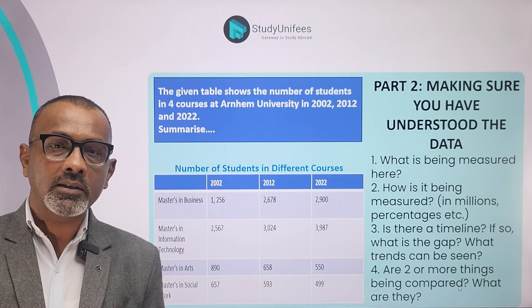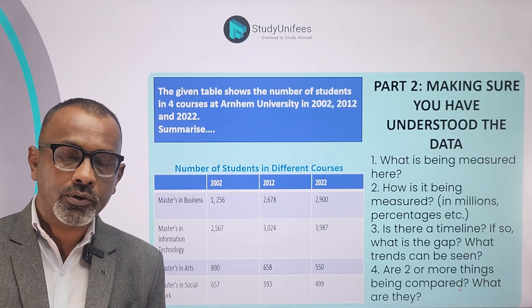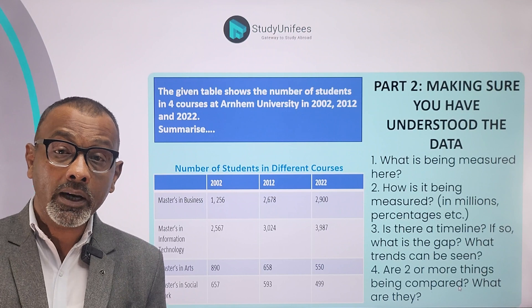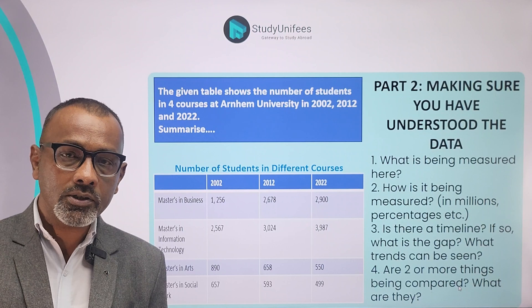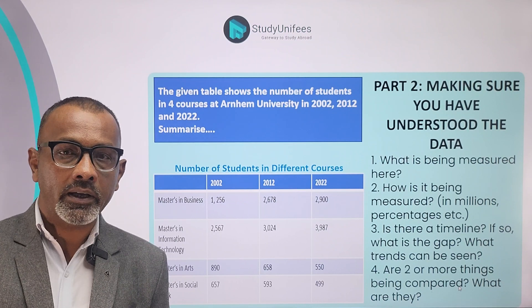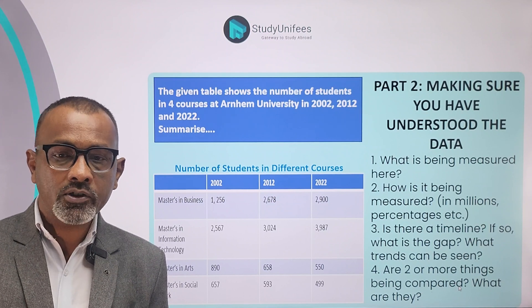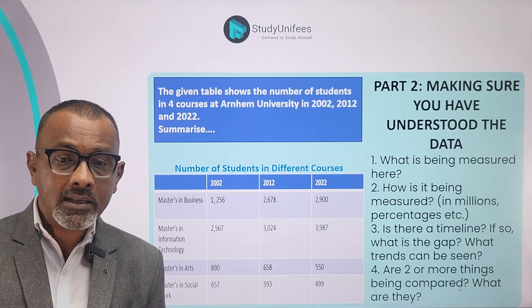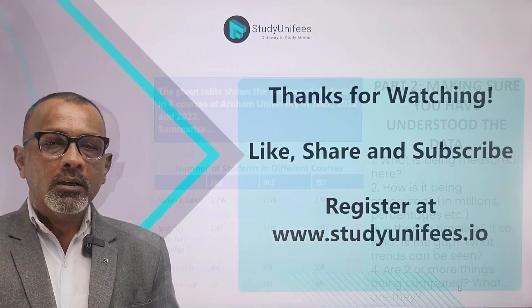Finally, let's look at analysis part 2 for tables. What is being measured here? The number of students on four courses at one university. How is it being measured? In simple numbers — not in millions or thousands. Is there a timeline? Yes, three different years have been shown. What are the trends? Masters in Business has a rising trend throughout the period, as does Masters in IT. However, the other two courses show a falling trend.